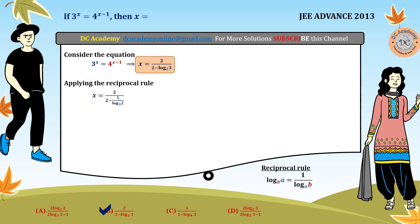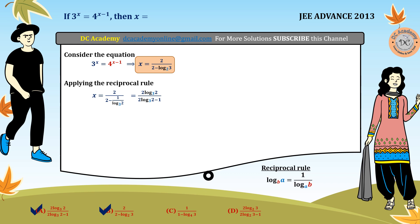This is the important aspect of the problem. We do cross multiplication — multiplying both sides by log base 3 of 2 — and we obtain option A. Therefore option A is also correct. So two options are confirmed correct so far, and the remaining two options still need to be tested.